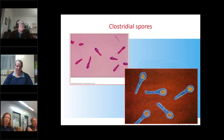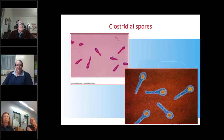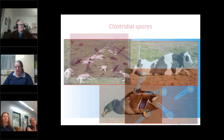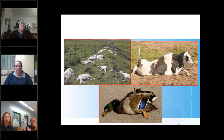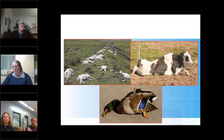Traditionally we think of clostridia in sheep and cattle, but they also occur in other animals. Clostridial diseases have been reported in a range of animals with varying susceptibility. Livestock and horses seem quite susceptible to disease, whereas birds of prey seem to have developed a degree of resistance — probably because of their scavenger-type lifestyles. As you can see in the slides, it's not just limited to sheep and cattle.